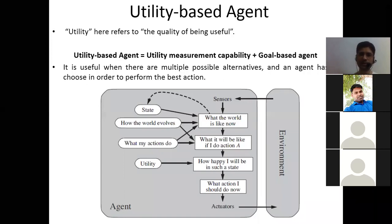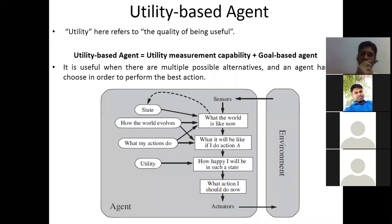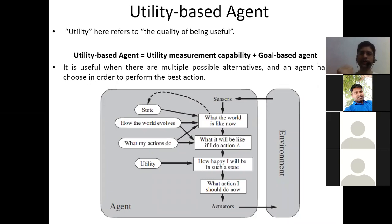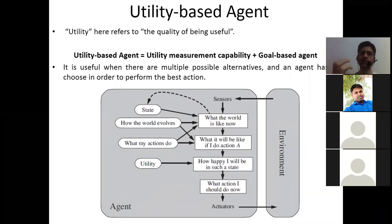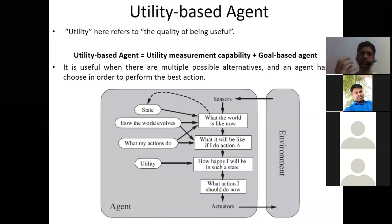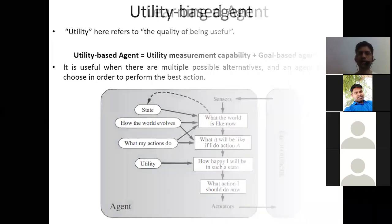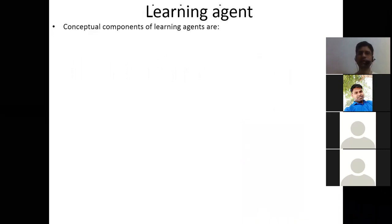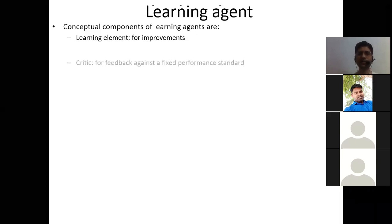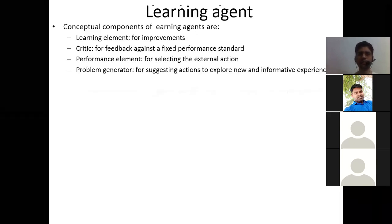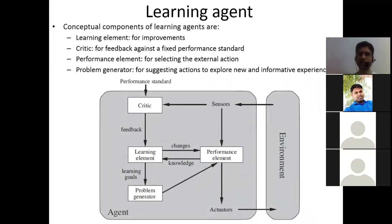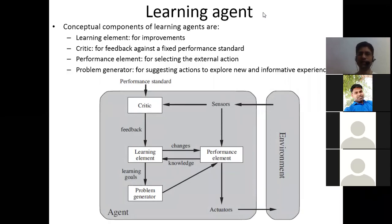In the utility-based agent diagram: the agent interacts with the environment through sensors; it uses 'what the world is like now,' 'what will it be like if I do action A or B,' and 'how happy will I be' to decide what action to do now, then executes through actuators. The last type is the learning agent, whose conceptual components are the learning element, critic, performance element, and problem generator — this will be discussed in the next class.